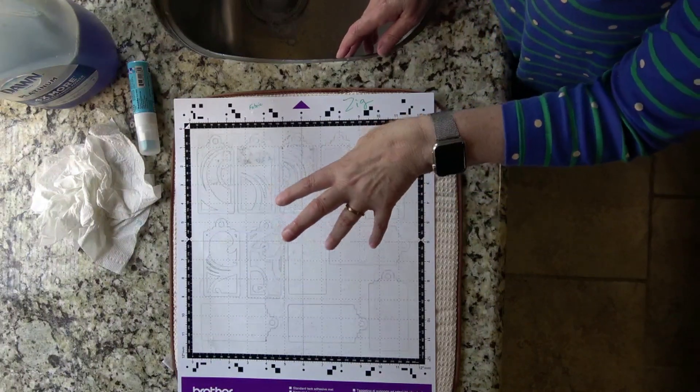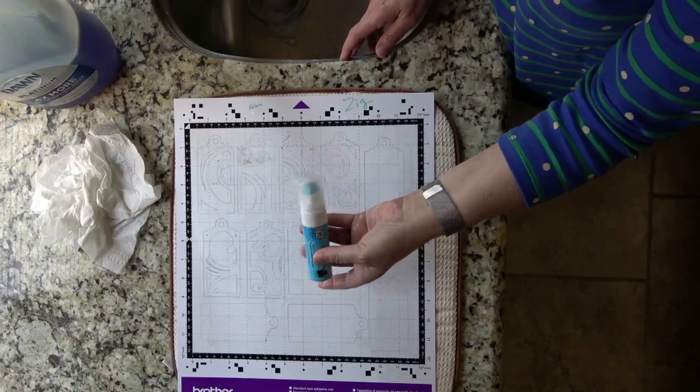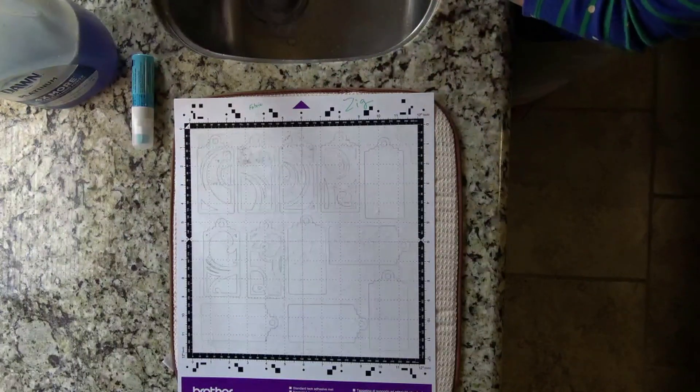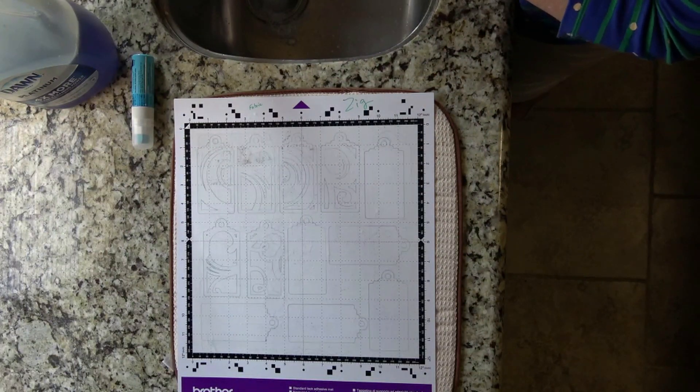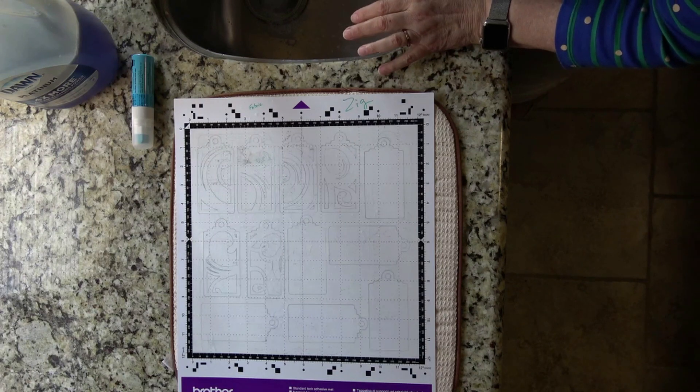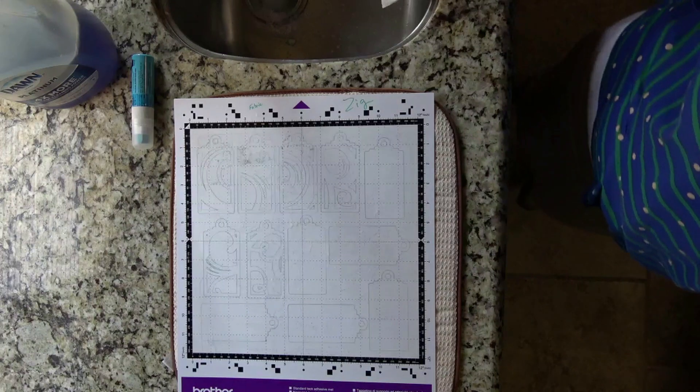So if you were wondering if you could keep washing the mat that's coated with the zig glue, I have washed both of my mats three or four times already, and it comes back really sticky. So it's still even too sticky to put paper on. So it's perfect for fabric. So I'll be back in a few minutes.